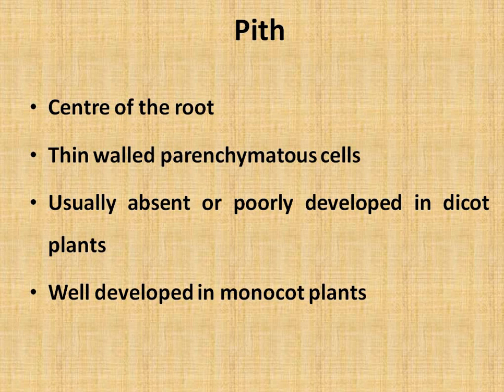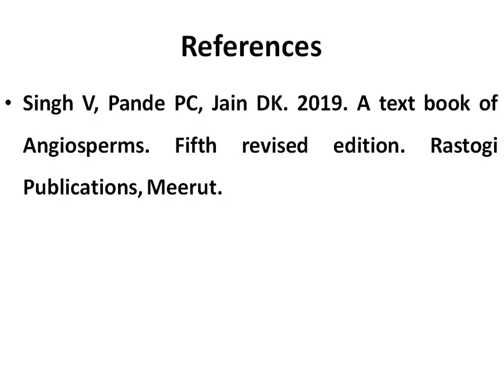So we studied about cortex, vascular tissue, and pith — this is the complete root internal organization which goes from outside: epidermis, cortex, endodermis, pericycle, vascular system with vascular bundles, and if present, pith at the center. This completes the content of this video. Thank you very much.